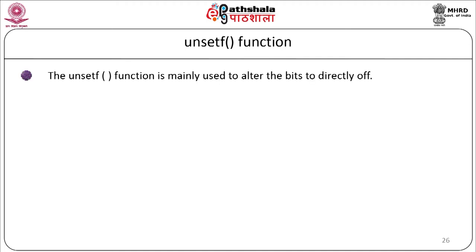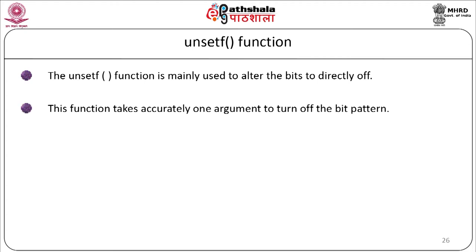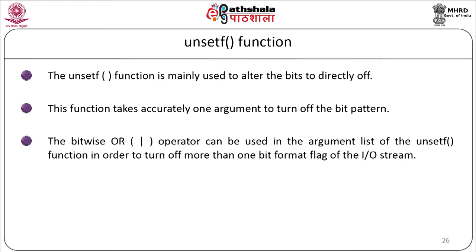The unsetf function is mainly used to alter the bits to directly off. This function takes exactly one argument to turn off the bit pattern. The bitwise OR operator can be used in the argument list to turn off more than one bit format flag of the iostream. The syntax is: cout.unsetf(flags to be turned off).